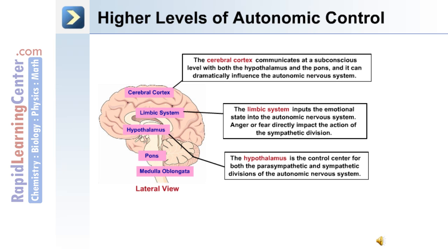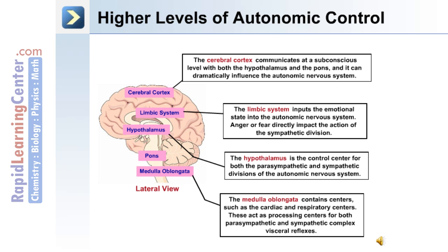The hypothalamus serves as a control center for both the parasympathetic and sympathetic divisions. The medulla oblongata contains centers such as the cardiac and respiratory centers, which act as processing centers for both parasympathetic and sympathetic complex visceral reflexes.